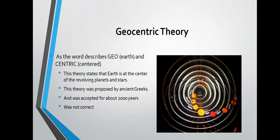Geocentric theory. Geo means earth and centric means center, so this theory states that Earth is at the center of revolving planets and stars. As you can see in the diagram, Earth is in the center and the Moon, Mercury, Venus, the Sun, Mars, Jupiter, and Saturn are all revolving around it. That is the geocentric theory. It was proposed by the ancient Greeks and was accepted for about 2000 years, but it was not correct.